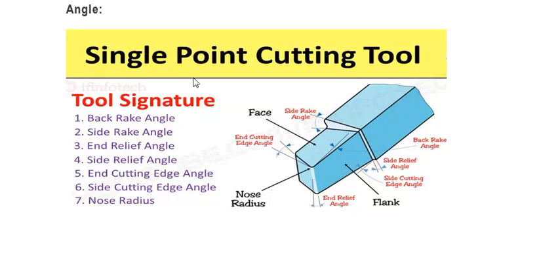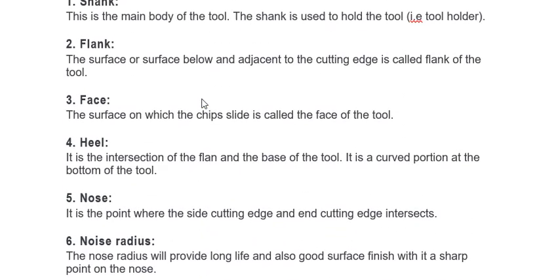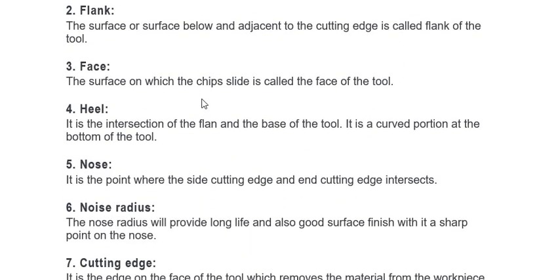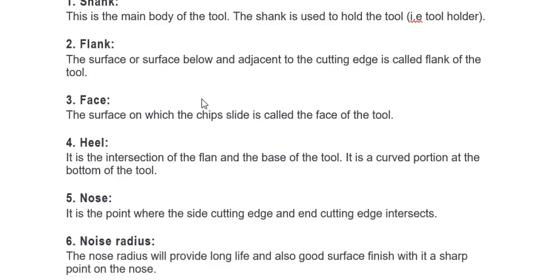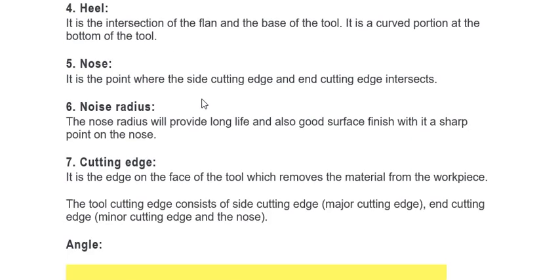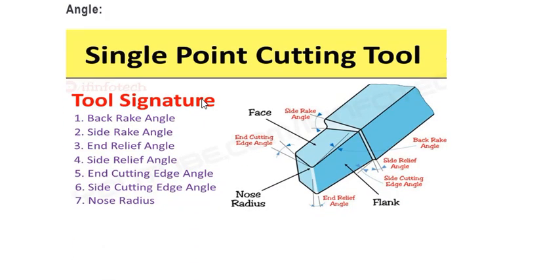Till now we have studied about the tool nomenclature. We will revise the names of the tool nomenclature. These are the seven nomenclature of a single point cutting tool: shank, flank, face, heel, nose, nose radius, and the cutting point. The overall description was given in the previous lecture. Now we will move further for the tool signature.